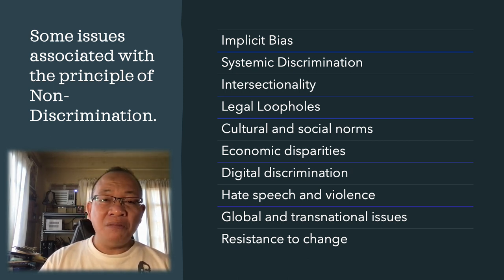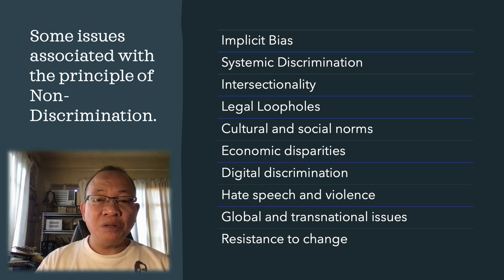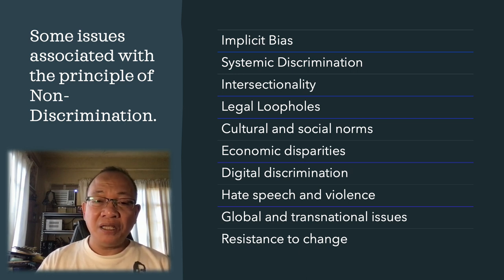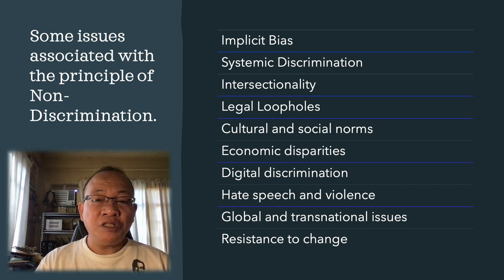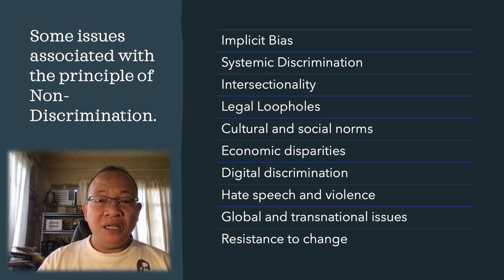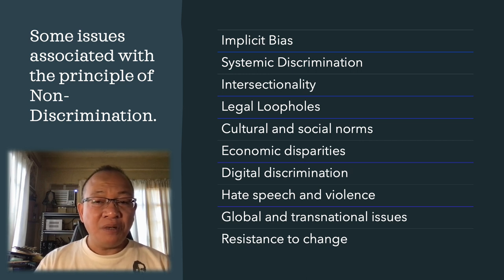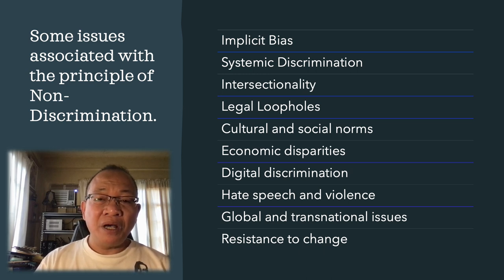Number seven is digital discrimination. With the increased use of technology and algorithms in decision-making processes, there is a risk of digital discrimination. Biases in algorithms or data used in artificial intelligence systems can result in discriminatory outcomes, particularly in areas such as hiring, lending, and criminal justice. Then we have hate speech and violence. Discrimination can manifest in the form of hate speech, harassment, or violence directed at individuals or communities based on their characteristics or identities. Addressing and preventing such behavior requires robust legal frameworks and societal condemnation.